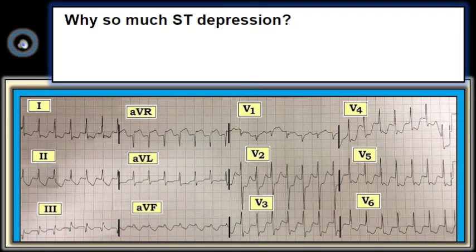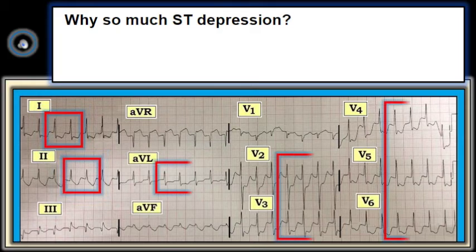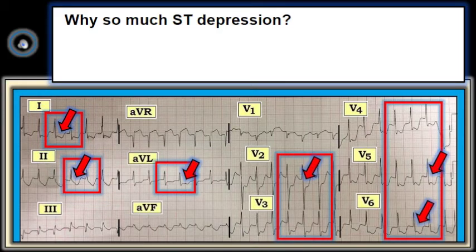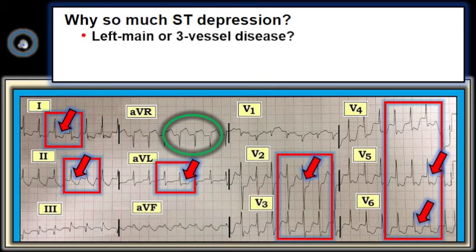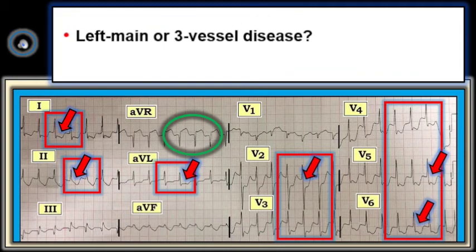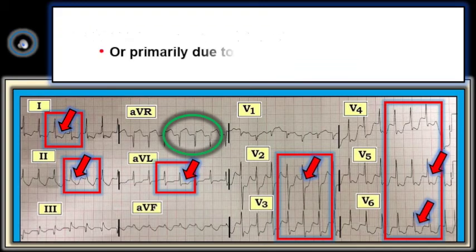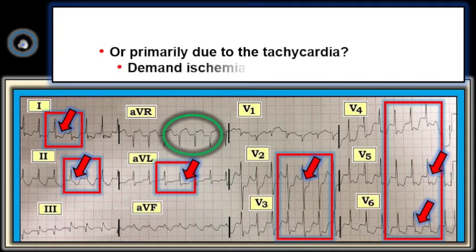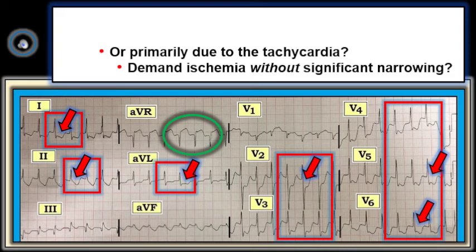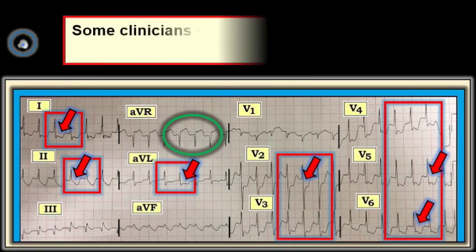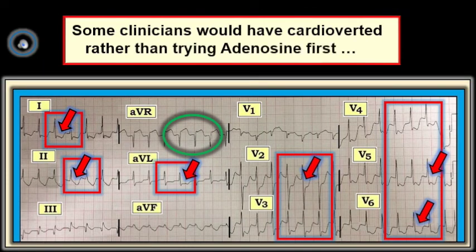The last issue to address in this case is the marked and diffuse ST segment depression we saw in the initial tracing. Especially when associated with ST elevation in lead AVR (green oval), the finding of diffuse ST depression should make one consider the possibility of severe coronary disease in a 60-year-old man with new onset chest pain. That said, all bets are off when the rate is so fast. In addition to drugs, strain from LVH, and electrolyte disorders, tachycardia is a common cause of ST depression. Keep in mind that time for diastolic filling is reduced when the heart rate is fast, which of itself may produce demand ischemia not necessarily associated with significant coronary vessel narrowing. The large amount of ST depression seen here is therefore another reason to consider electrical cardioversion sooner rather than later in this patient.